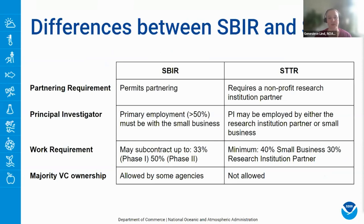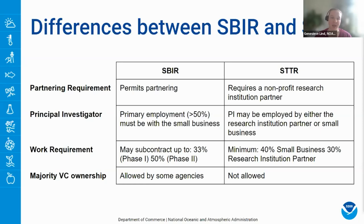The SBIR and STTR programs are similar in many ways, except for three critical differences. First, the STTR program requires partnering with a nonprofit research institution, whereas SBIR permits but does not require partnering. Second, with SBIR the principal investigator must be greater than 50% employed by the small business, while with STTR the PI can be employed by either the small business or the research institution. Third, STTR requires 40% of the work be done by the small business and at least 30% by the research institution partner; SBIR allows subcontracting up to 33% in phase one and 50% in phase two. Finally, majority venture capital ownership is allowed by some agencies with SBIR but not with STTR.